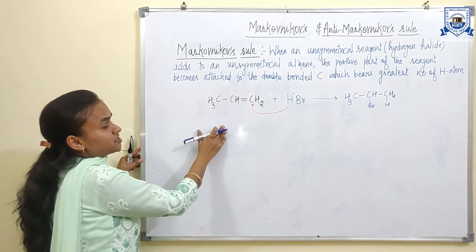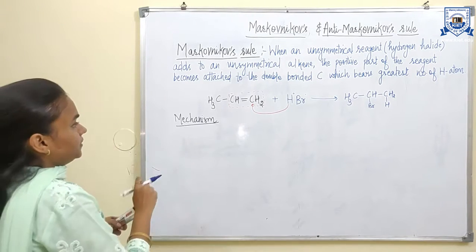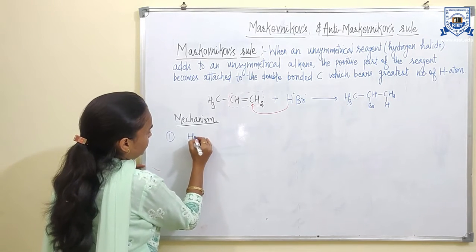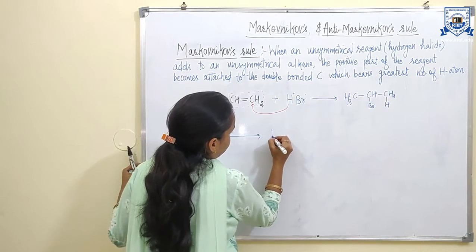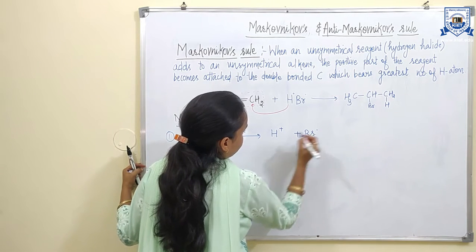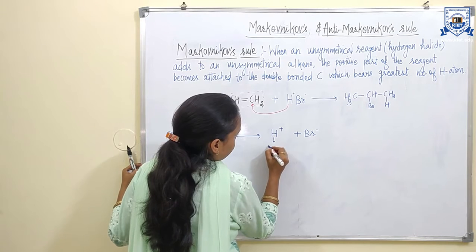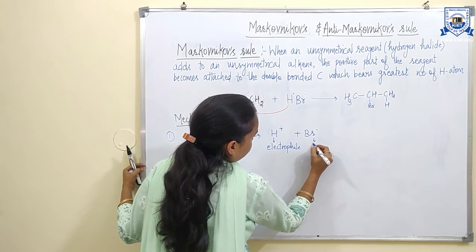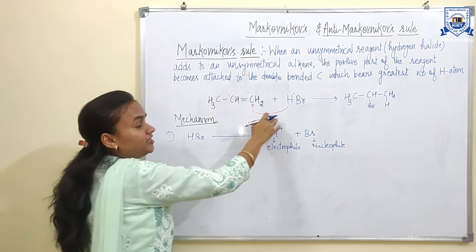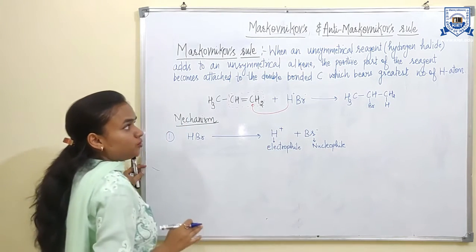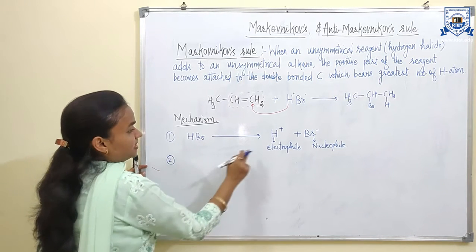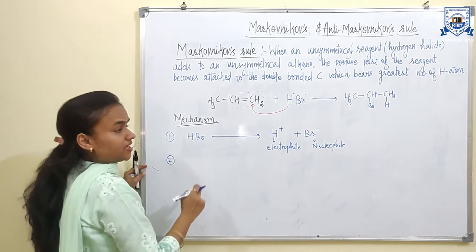Now let's discuss the mechanism for this rule. In the first step, the unsymmetrical reagent HBr will break down into H⁺ and Br⁻. H⁺ is called the electrophile and Br⁻ is called the nucleophile. Basically it is an electrophilic addition reaction and no other reagent is required. The next step is the attack of the electrophile on the carbon-carbon double bond.